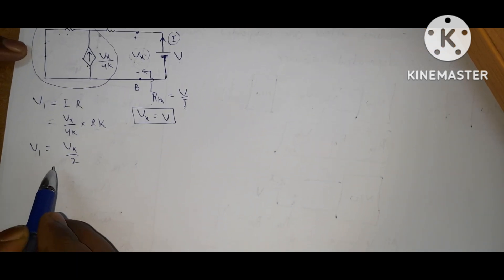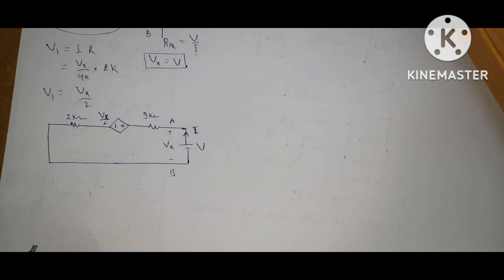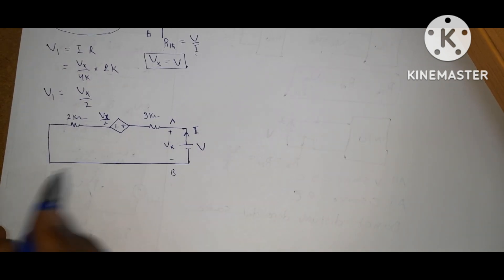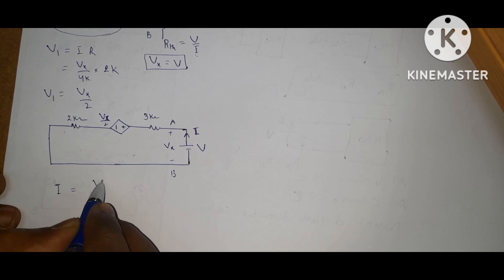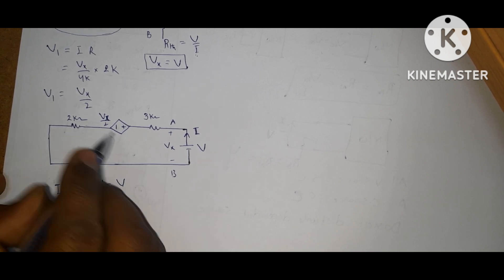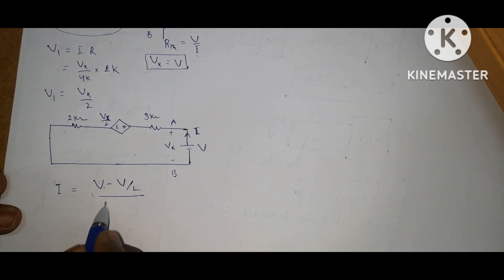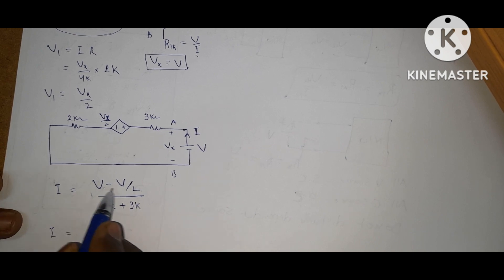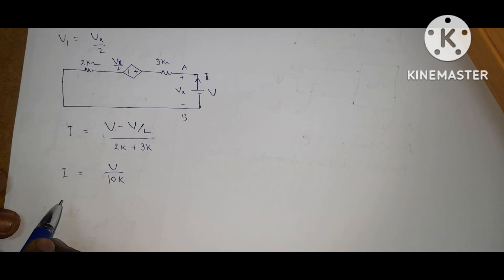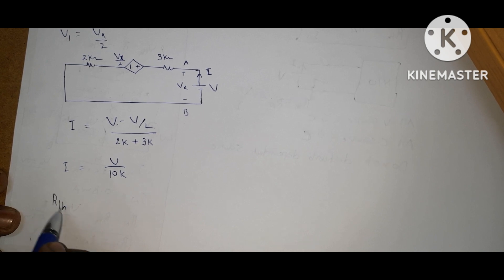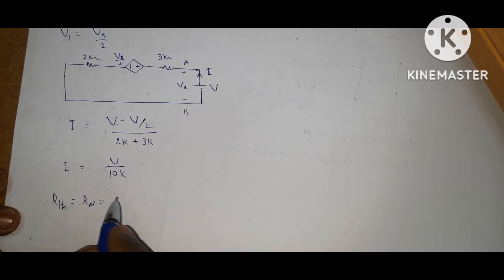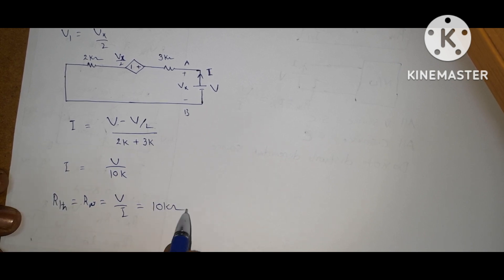So V1 equals Vx by 2. The circuit then simplifies. Current I equals (V minus Vx by 2) divided by (2kΩ plus 3kΩ). Since Vx equals V, this becomes (V by 2) divided by 5kΩ, giving I equals V by 10kΩ. Therefore R Thevenin equals R Norton equals V by I equals 10 kilohms, confirming our earlier result.